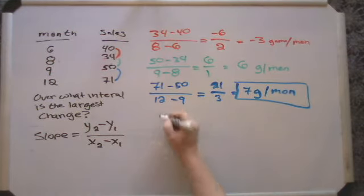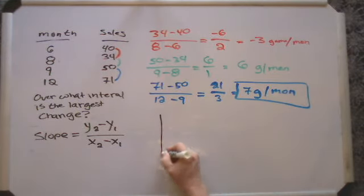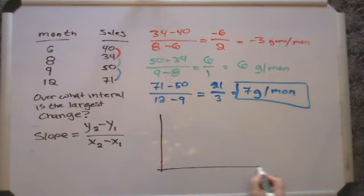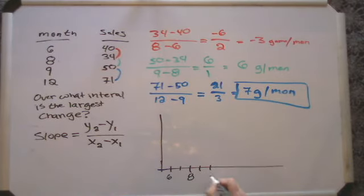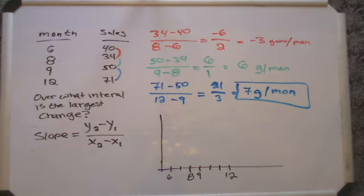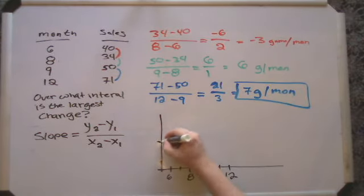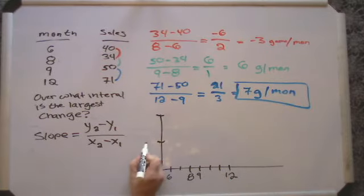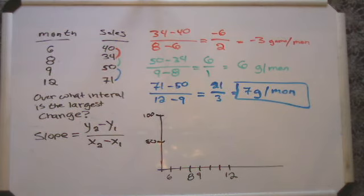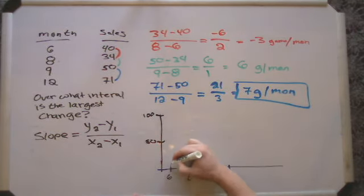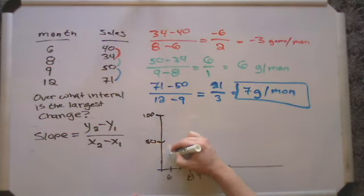If I were to graph this, so here's my graph. And let's see. Here is month six, seven, eight, nine, 10. So here's 9, 10, 11, and 12. Let's say this is 50 here, and this is 100. So here's 50, and there's 100 games per month. We're going to mark off the sales. So let's see. There's 25 right here. This would be 40.